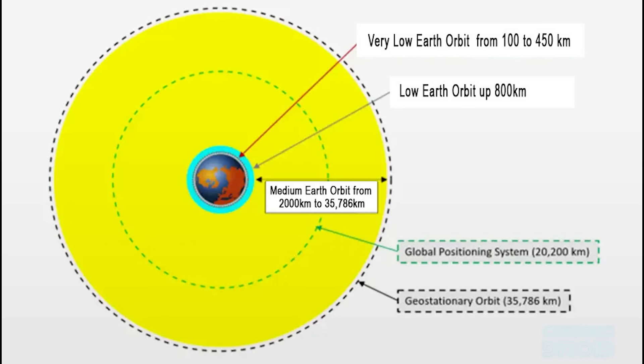The mega constellations will be in the lowest two: very low earth orbit and low earth orbit up to 800 kilometers.